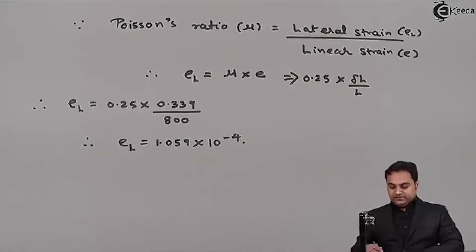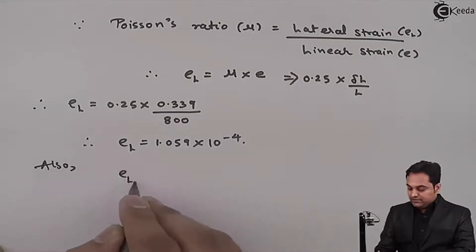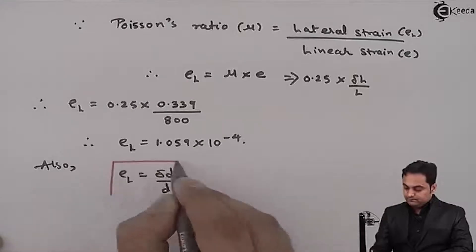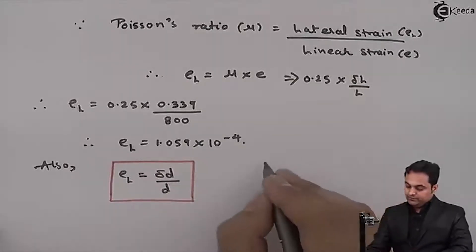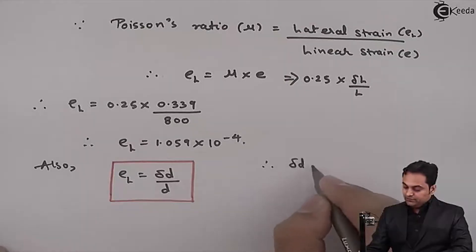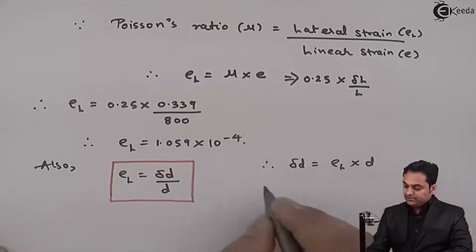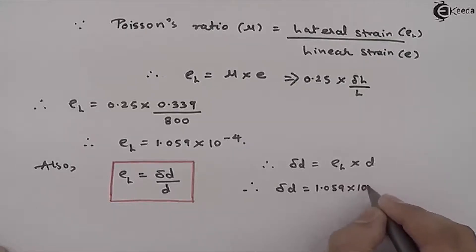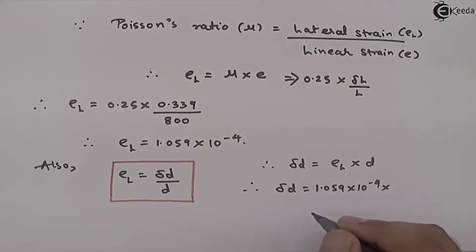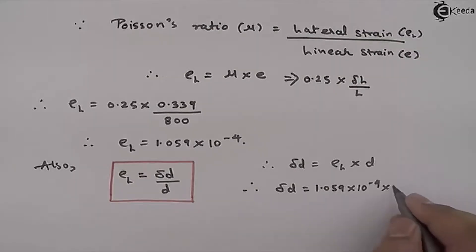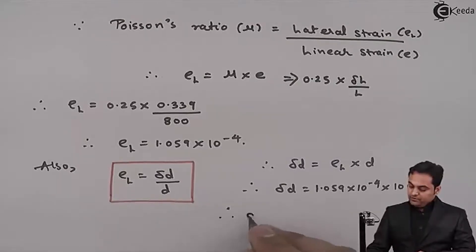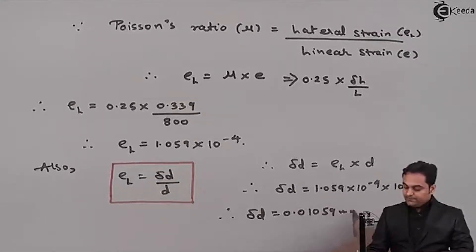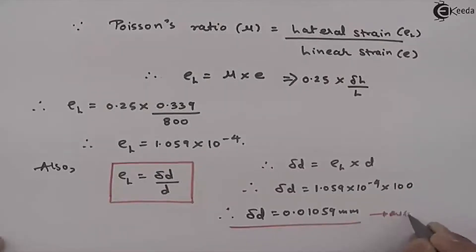After getting the lateral strain, we note that lateral strain = change in diameter / original diameter. Therefore, change in diameter = lateral strain × original diameter = 1.059×10⁻⁴ × 100 mm = 0.01059 mm. This is the second answer.